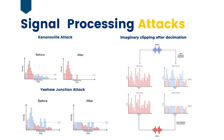The frequency domain changes before and after applying the attacks are illustrated in the figure. The amplitudes lower than the threshold are removed in Kenansfield, and amplitudes higher than the threshold are clipped in Nihao. In our attack, only the imaginary component is clipped using a threshold, and the real and imaginary components are concatenated back to construct the final waveform.